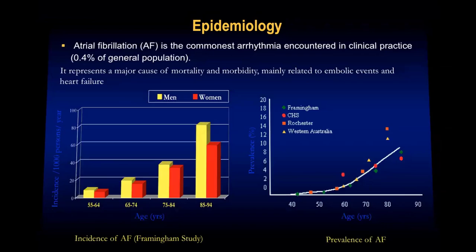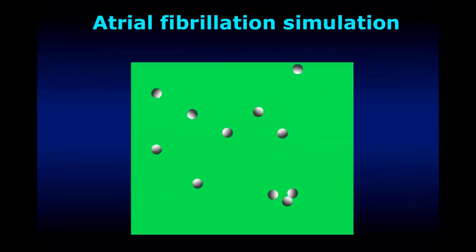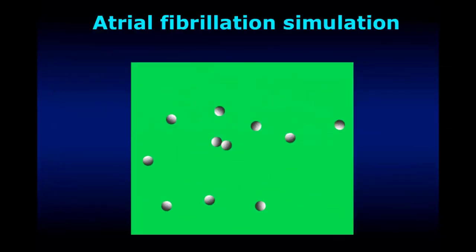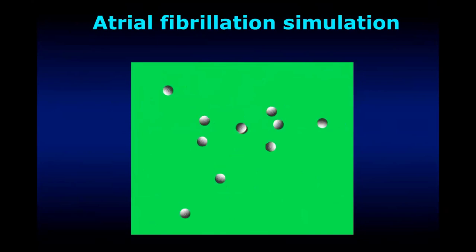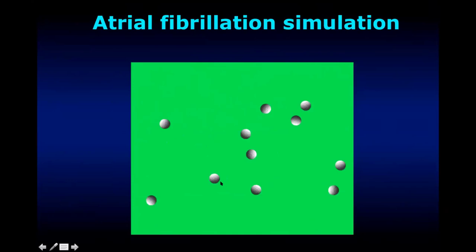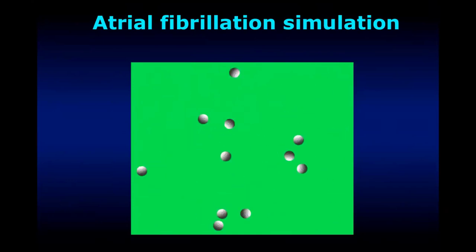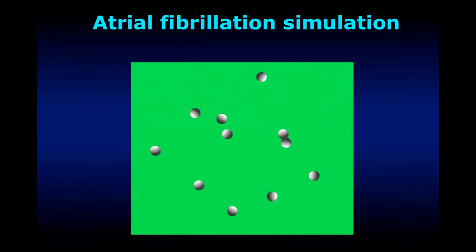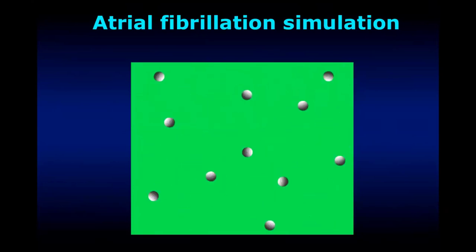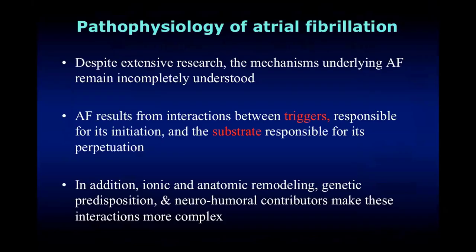When we talk about pathophysiology of atrial fibrillation, we'll start with what is atrial fibrillation? Atrial fibrillation is simply a chaotic electrical activation of the atrium which replaces the normal, regular, rhythmic activation of the atrium. Instead, we have chaotic electrical activation causing fibrillatory conduction and loss of atrial systole or atrial kick. But what is the mechanism of this chaotic electrical activation of both atria, right and left?